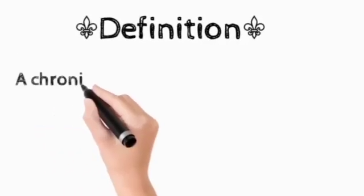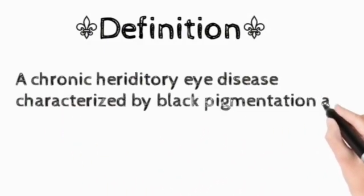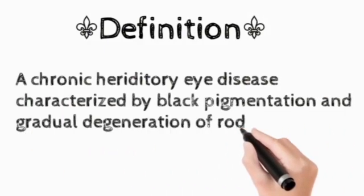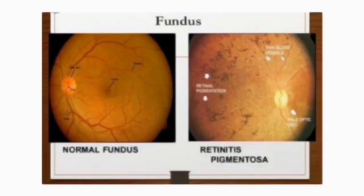Here is the basic definition of RP: a chronic hereditary eye disease characterized by black pigmentation and gradual degeneration of rods. Let's see the fundus of a normal person and fundus of a patient with RP.